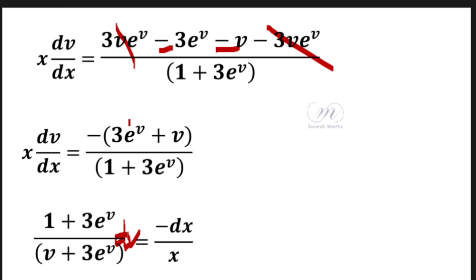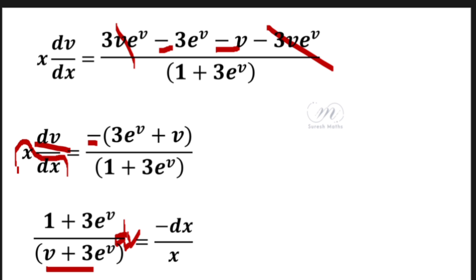The numerator is 3e^v plus v and the denominator is also 3e^v plus v, so they cancel. This gives dv on one side and minus dx/x on the other side, separating the variables.